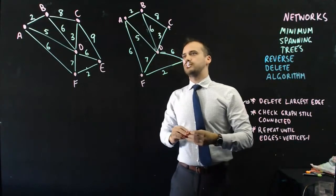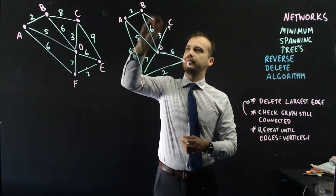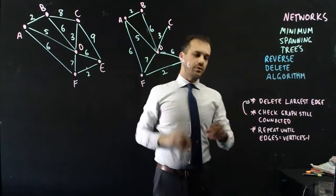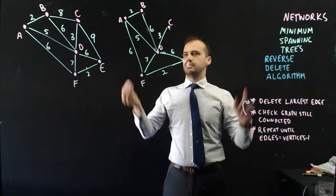Delete the largest edge. Eight's quite a large edge. Let's delete that one. Are all the vertices still connected? Yes, they are.